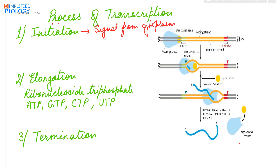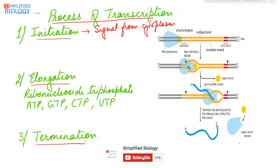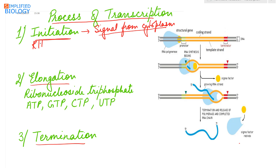The process of transcription occurs in 3 steps: initiation, elongation, and termination. In initiation, upon receiving a signal from the cytoplasm, RNA polymerase binds to the promoter site on the DNA.